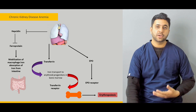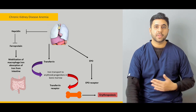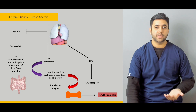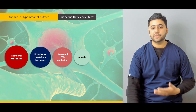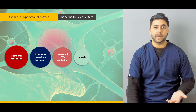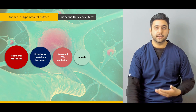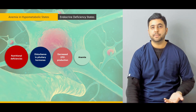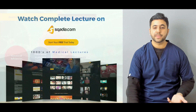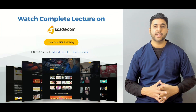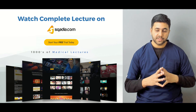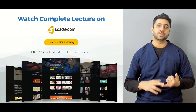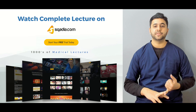Then we are going to move on to chronic kidney disease anemia — what goes wrong at the level of the kidney that leads to the development of a normocytic anemia. Anemia in a hypermetabolic state, for example in nutritional or endocrine deficiency, will also be discussed, along with how these lead to hyperproliferative anemia. Finally, we will cover differentiation at the laboratory level and treatment of these hyperproliferative states.